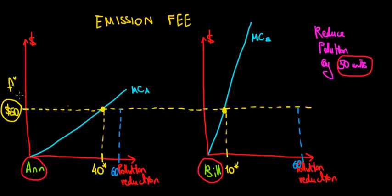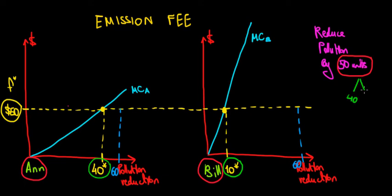What we can notice on the graph — this is purely hypothetical — is that at the $50 fee, that would be equal to the marginal cost of reducing 40 units of pollution for N, and it would also equal the marginal cost of reducing 10 units by Bill. So if N reduces 40 units of pollution and Bill reduces another 10, we are achieving our 50 units of reduction.